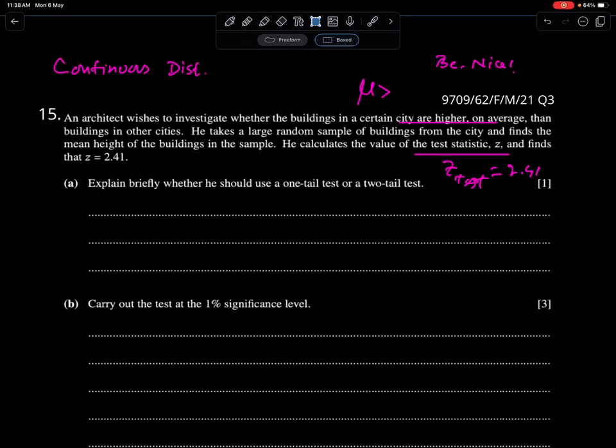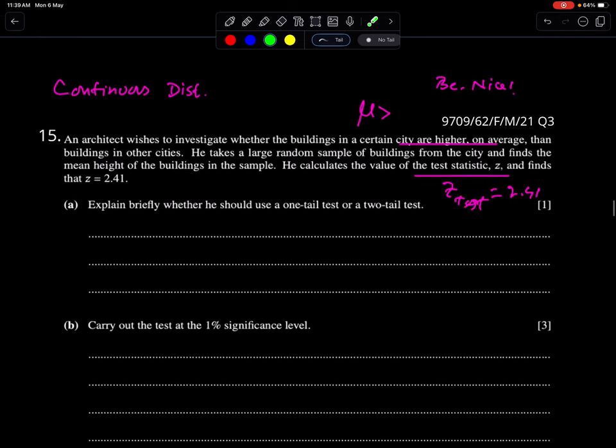Bismillah ar-Rahman ar-Rahim, Sallallahu alayhi wa sallam, Allahumma rabbi zidni ilma, Ameen, Alhamdulillahi rabbil alameen. Examples of continuous distribution in testing of hypothesis. An important advice: we should be nice to everyone. This question is from March 21, paper 6-2, question 3.